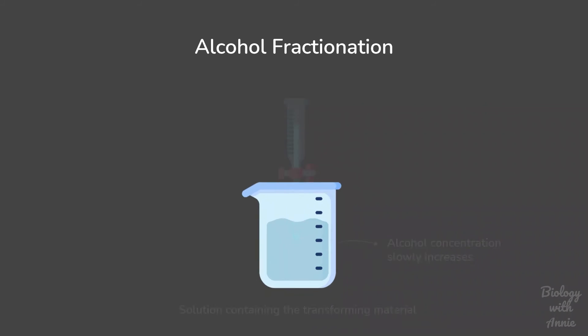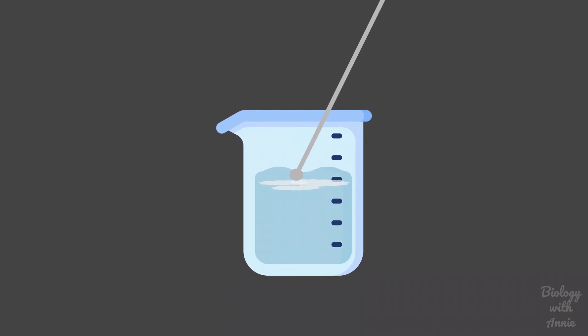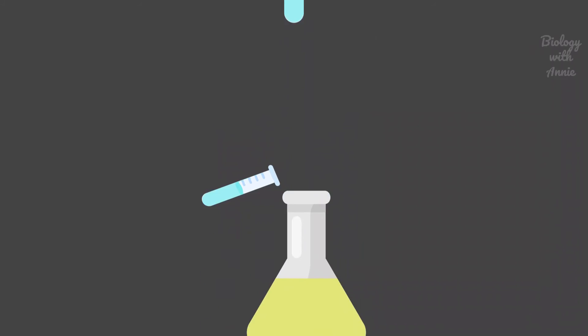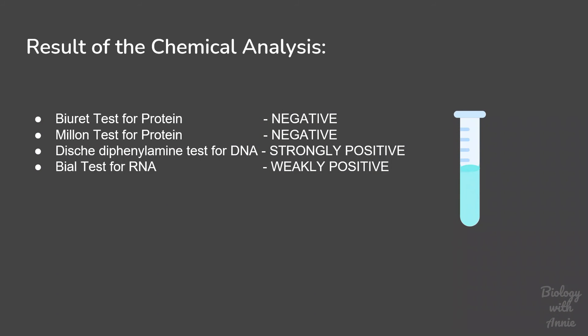At a particular concentration, Avery observed the precipitation of a material that formed fibrous strands. This was taken out and re-dissolved in water. When this component was tested, they found that it is the active material responsible for transformation. Different chemical tests were performed which revealed that a large amount of DNA was present in this solution. But to confirm that DNA is the transforming principle, they decided to perform one more test.